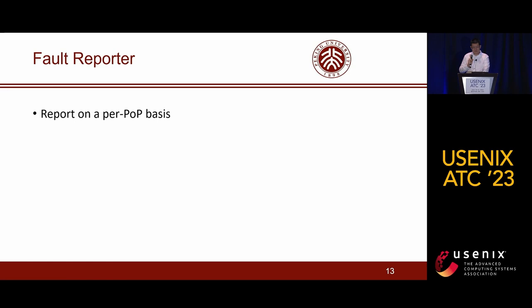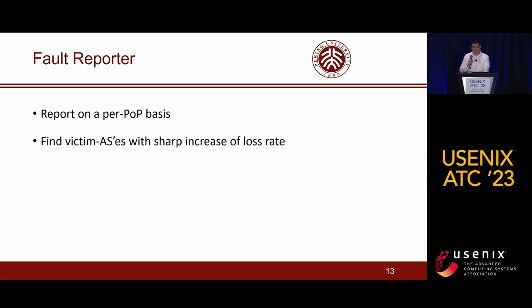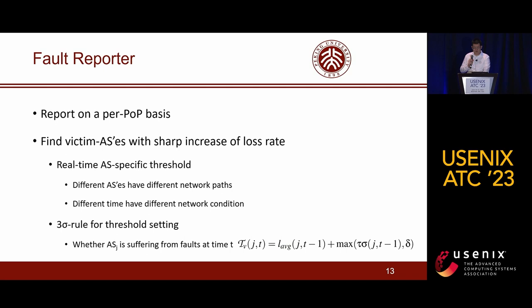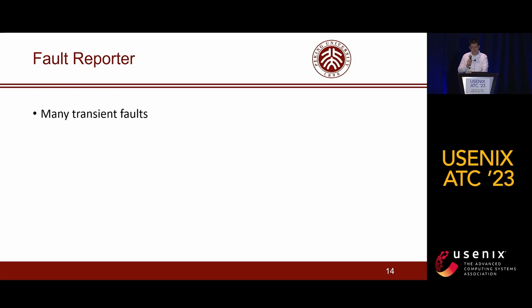With the packet loss rate monitored by the QoS monitor, the fault reporter reports ASes with abnormal QoS, also called victim ASes, for further diagnosis. Similarly, it reports on a per-POP basis. It finds ASes with a sharp increase in loss rate and regards them as victim ASes. Because different ASes point to different network paths and the condition of the internet varies over time, we set a real-time AS-specific threshold to identify victim ASes, using the well-known Three Sigma rule to guide our setting.